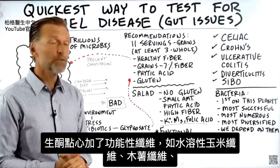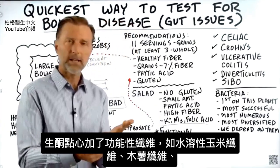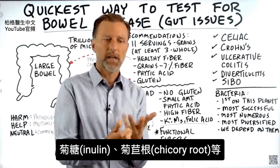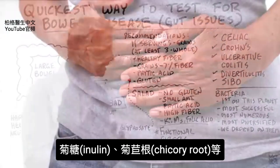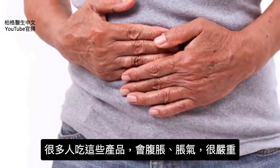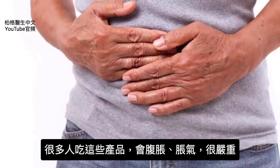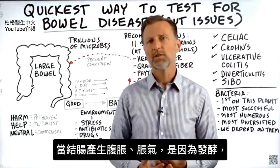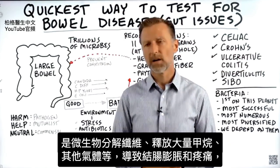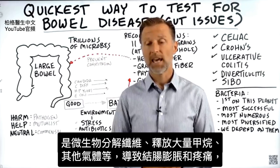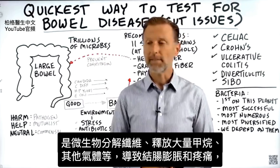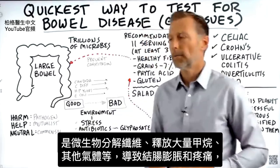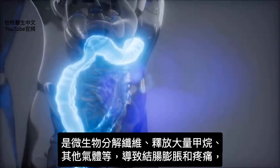Then you have all these new functional fibers in keto treats — soluble corn fiber, tapioca fiber, inulin, and chicory root. So many people are experiencing digestive bloating and gas from these products, it's just off the chart. What's happening in the colon is fermentation — the microbes are attempting to break down these fibers and releasing a lot of methane gas and other gases, creating distention and pain in your colon.